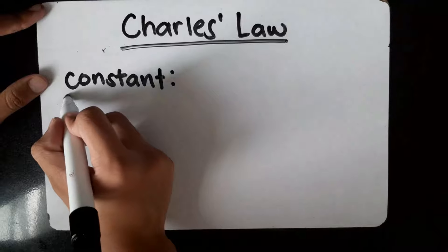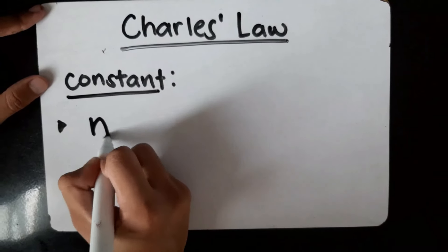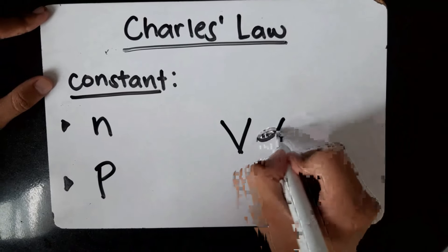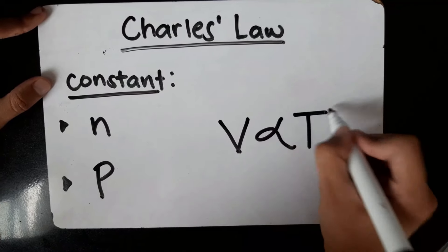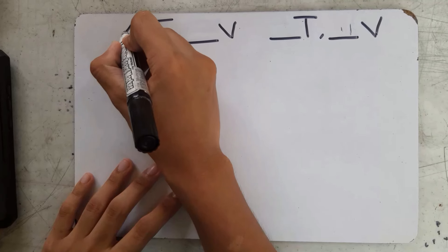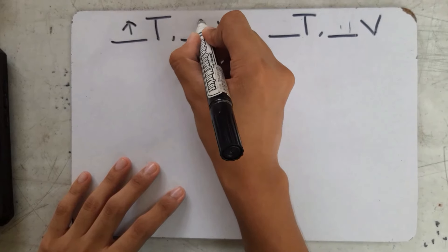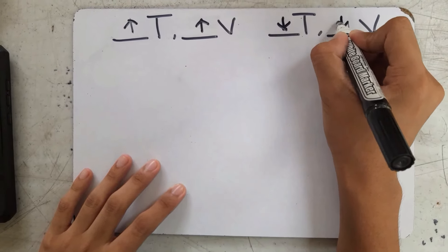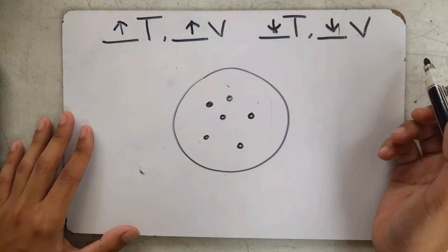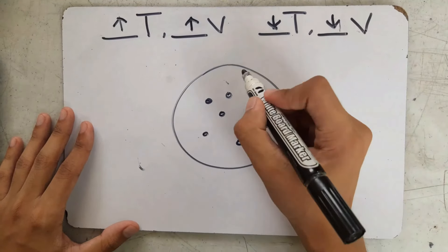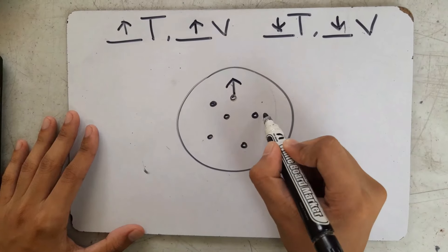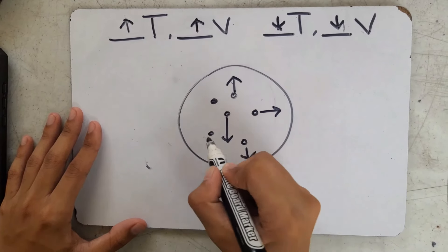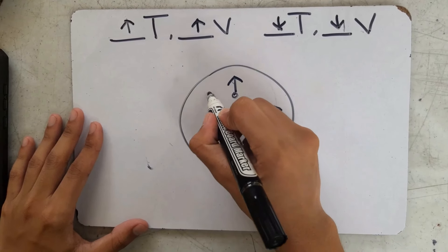Charles' Law: Under constant number of particles and pressure, the volume of a gas is directly proportional to absolute temperature. This means that when temperature increases, volume increases, and when temperature decreases, volume decreases. This happens because high temperature makes the gas atoms move faster and farther from each other, which results in more space occupied by them.